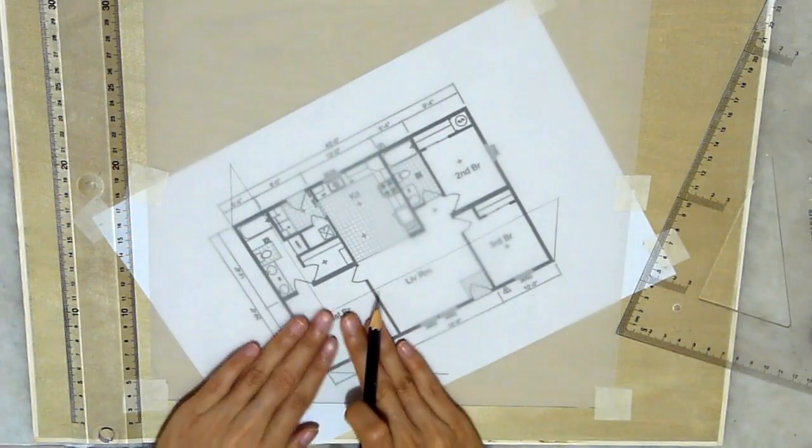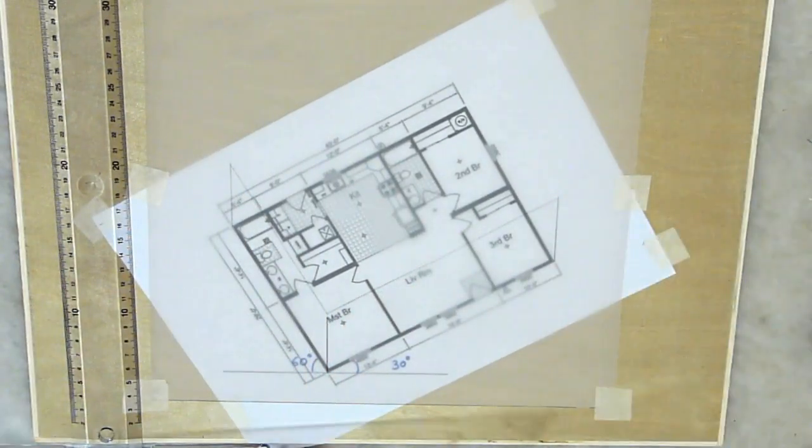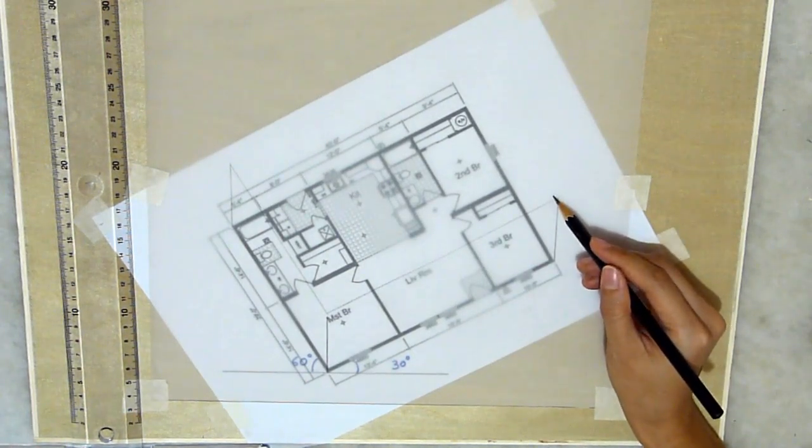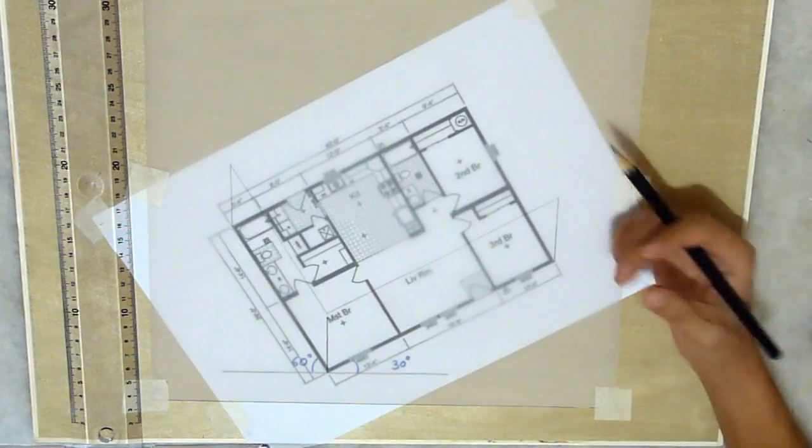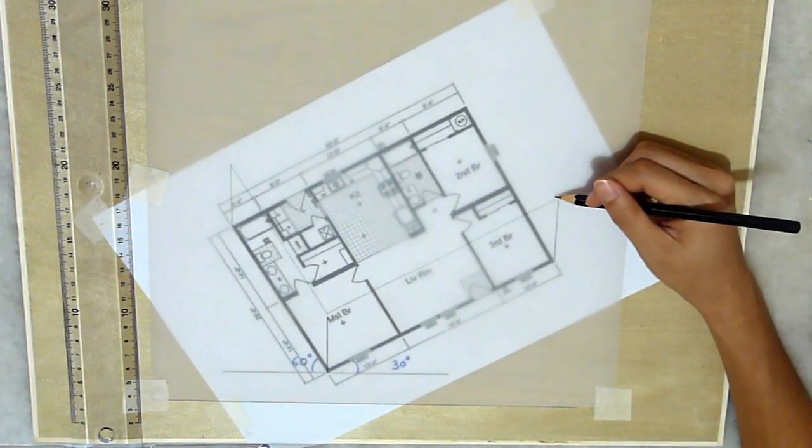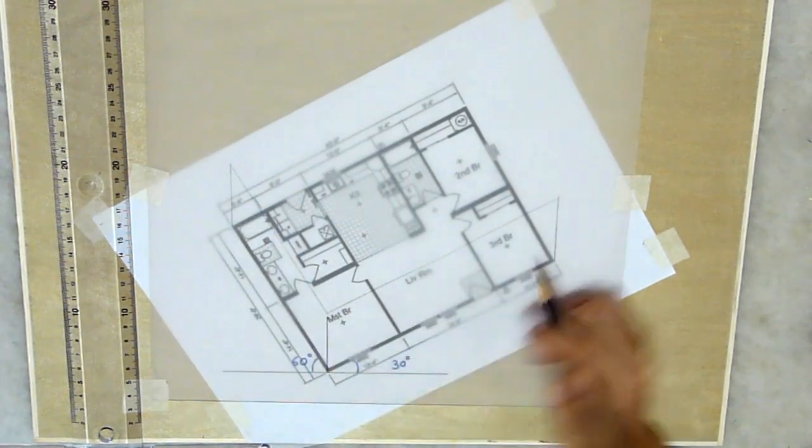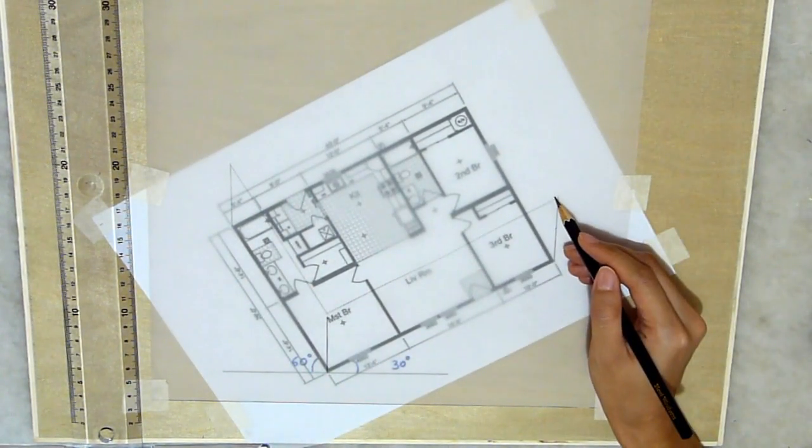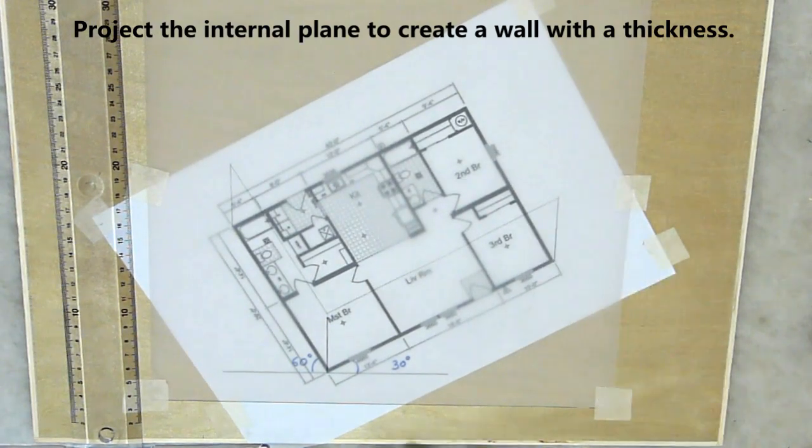Now that I've completed the first two planes facing me, I would then proceed to draw the inner side of the wall to make the wall look like a 3D. Because every wall has a thickness. Right now I've just completed the plane. I'm going to go ahead and do the inner side of the wall so to make this look like a 3D.